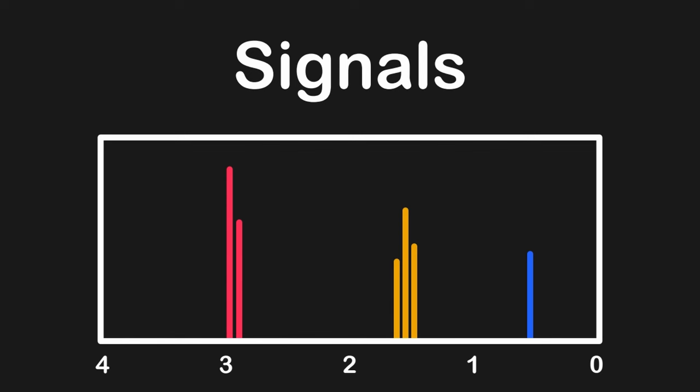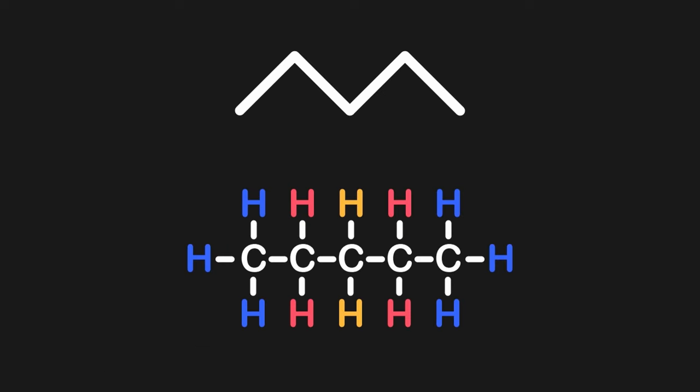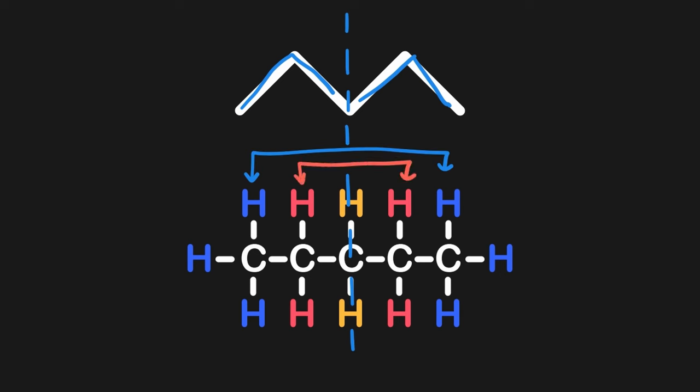We will begin by learning about signals, or the number of distinct peaks seen on a spectrum, as indicated by the different colored peaks shown here. Each signal is produced by unique or chemically distinct hydrogens, so if a molecule has three unique hydrogens, it will produce three distinct signals on an NMR spectra. We can determine whether or not a hydrogen is unique by looking at symmetry. For example, if we draw a vertical symmetry line down the center of pentane, we can see that the molecule is mirrored across this line, so the hydrogens mirrored across this line are chemically identical to one another.